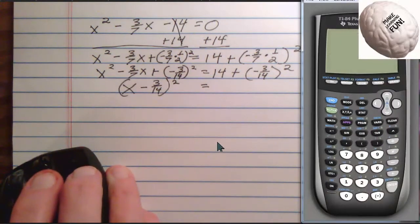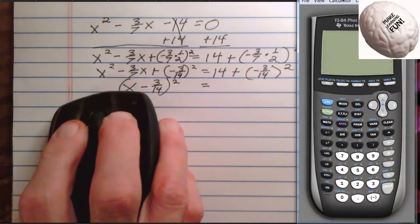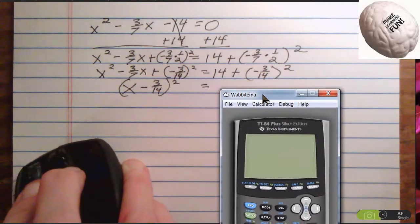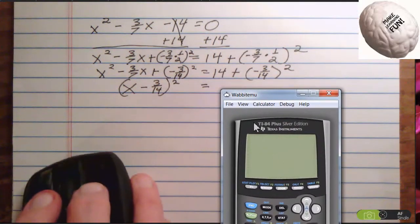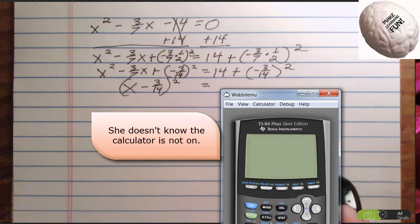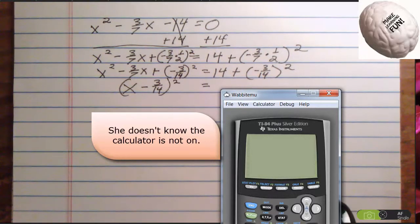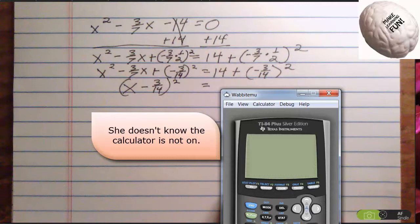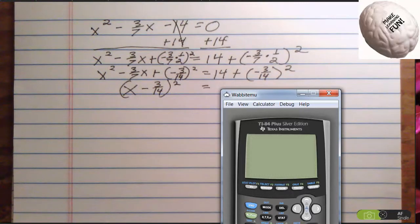This is the Wabbit Emu. Okay, now let's move it down here. And I am going to add 14 plus parentheses negative 3 divided by 7 parentheses closed squared. Oh, I have to turn it on.